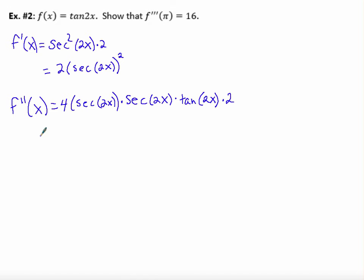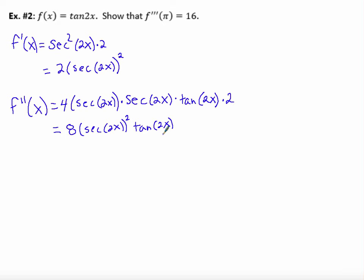This derivative is a little wild, but that's okay. Let's tidy it up. I've got 2 times 4, which is 8. And I've got secant 2x times secant 2x — that is secant of 2x squared. And then I also have that tangent of 2x that is also being multiplied. Now I didn't want the second derivative — I want the third derivative. So we've got to calculate the derivative again. So this is a crazy problem. We've got F triple prime.